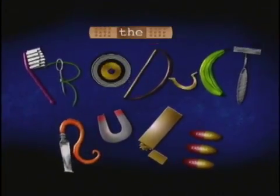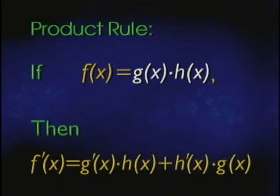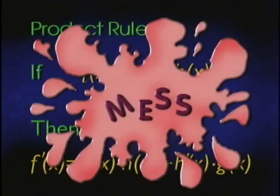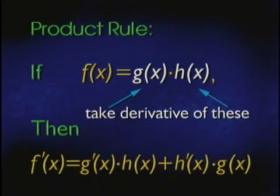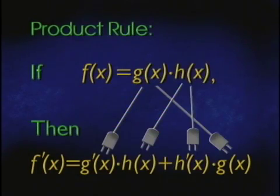Next, the product rule. The product rule says that the derivative of the product of two functions is the derivative of the first times the second, plus the derivative of the second times the first. This looks like a big mess, but all you really need to do is take the derivatives of the two functions you are given, and then plug everything in this formula. It's easier than it looks, trust me.